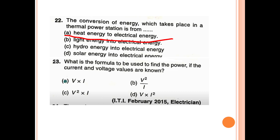What is the formula to be used to find the power if the current and voltage values are known? The formula for power is P equal to V into I.